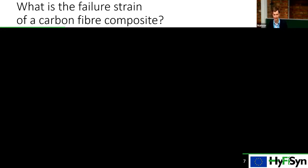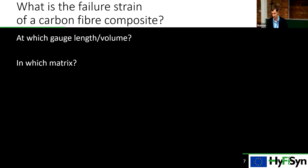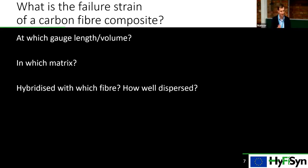If I were to ask you what the failure strain of a carbon fiber composite is, the first question you'd have to answer is: at what gauge length or volume? Because size effects are inherent in composites — a larger composite will on average be weaker than a smaller one, so failure strain depends on the size being tested. Which matrix is also important: a polypropylene matrix with carbon fiber will give a lower failure strain than one of the best-performance epoxy matrices.